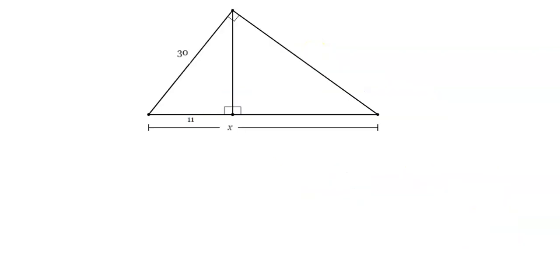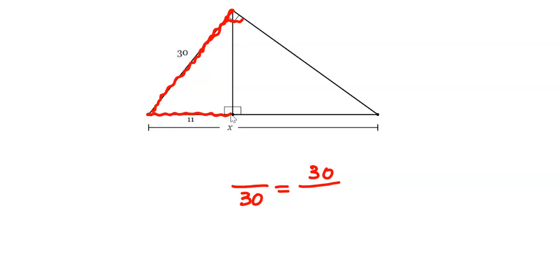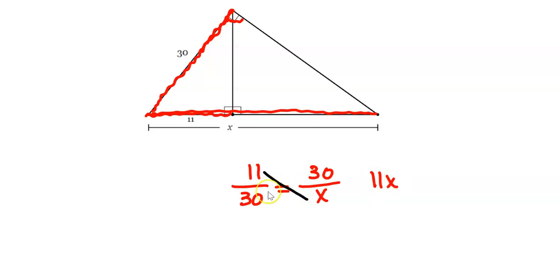Here's another example. The skier goes down the left side of the mountain. The left side, 30, is the geometric mean, so it's listed twice. Once the skier gets to the bottom, the skier can go to the first aid tent, which is 11, or all the way to the other side, which is x. So 30 is the geometric mean of 11 and x. Cross-multiplying: 11 times x equals 30 times 30, which is 900. Dividing both sides by 11, we can't simplify that fraction, so x = 900/11.